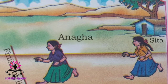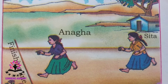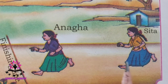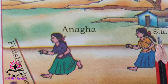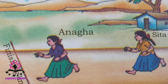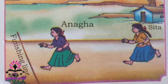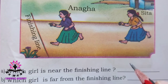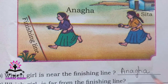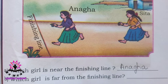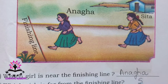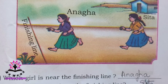Look at the picture and answer: which girl is near the finishing line? A running race is going on — Anaga and Sita are the competitors. Here is the finishing line. Which girl is near the finishing line? Anaga is near the finishing line. Write: Anaga is near the finishing line. Which girl is far from the finishing line? Sita is far from the finishing line.